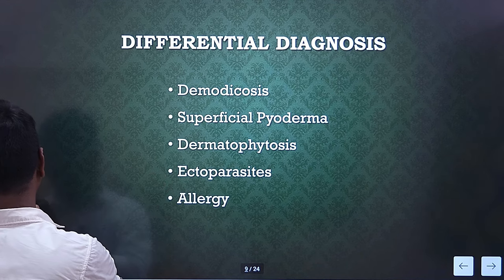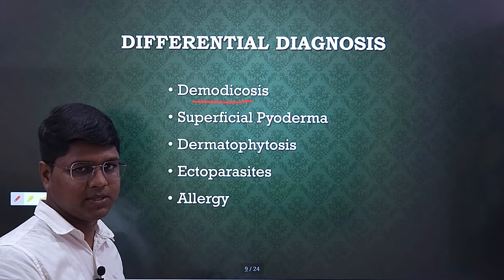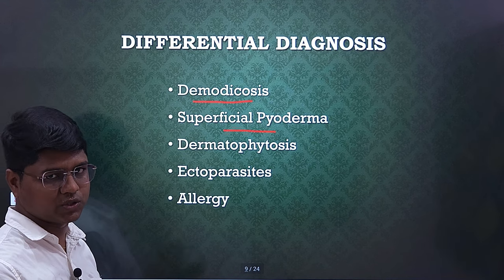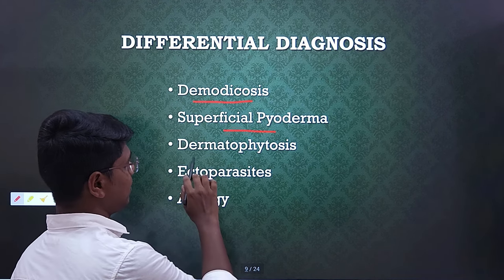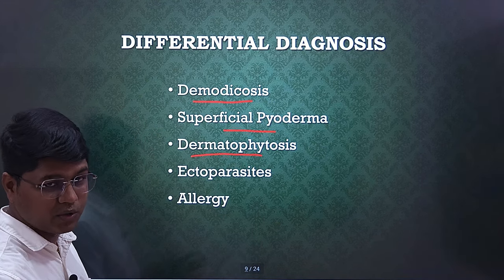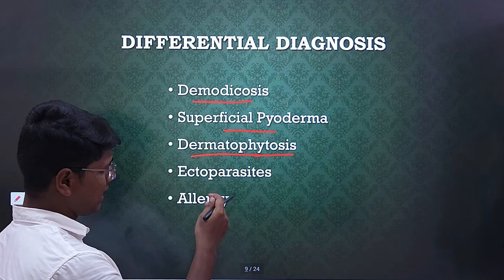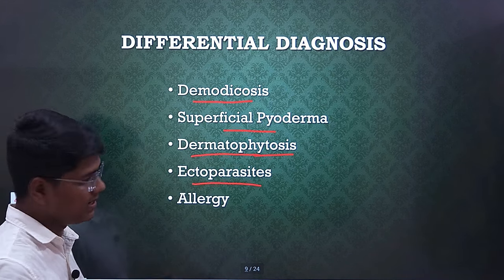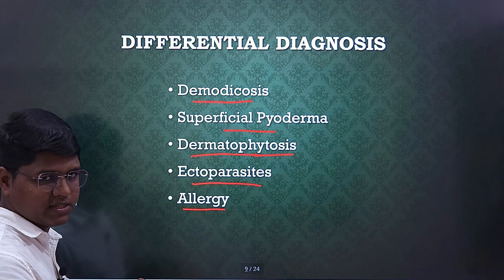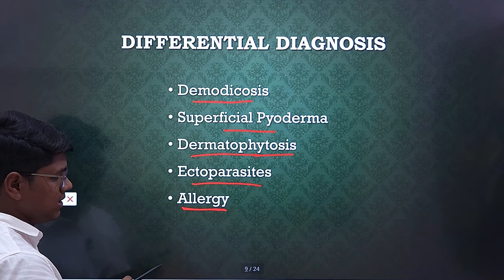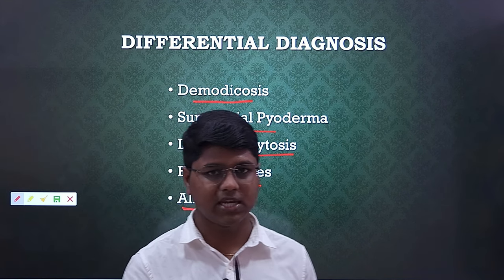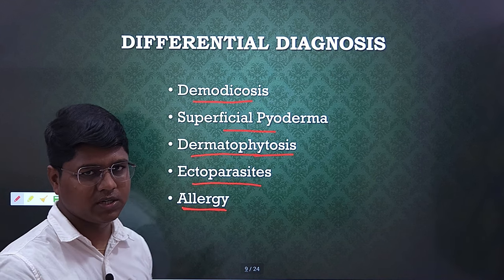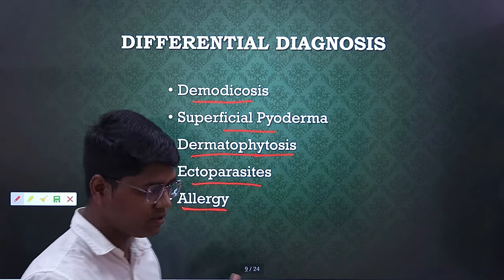Differential diagnosis: Demodicosis — this can easily be identified by skin scraping examination. Superficial pyoderma — the discharge is usually pus-colored or white-colored. Dermatophytosis — there will be less itching and also dermatophytic nodules. There will be nail discoloration in dermatophytosis and the nail bed will be inflamed. Ectoparasites can easily be identified. For allergy, we will discuss atopic dermatitis in subsequent classes. In case of allergy, we don't have a very good diagnostic system — allergy can be diagnosed by IgE antibody test. Usually, if the animal is not responding to antibacterial, antiparasitic, and antifungal medication, then usually it is allergy.